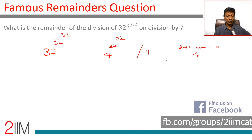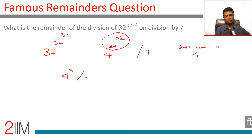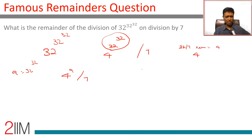When you divide 32 by 7, we get the remainder as 4, so we use only this 4 to find this out. Now this 32 power 32 — I'm going to ignore that for now and think of it as some 4 power a, divided by 7. I'm going to call this 'a' as 32 power 32 — we'll come to that later on.